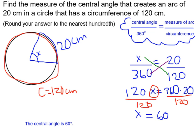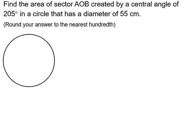This one was a little bit quicker because they already gave us the circumference and we didn't have to find it. What else could they ask? They can ask you about the sector. The sector is about the same thing, but instead of using the circumference, we're going to use the area of the disk. Let's look at this problem.